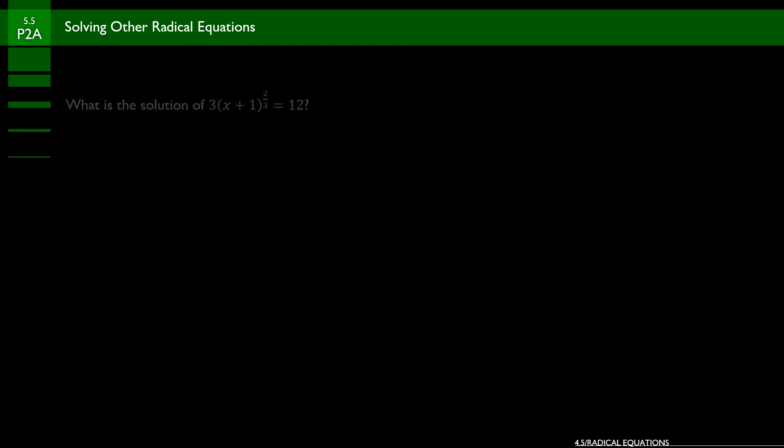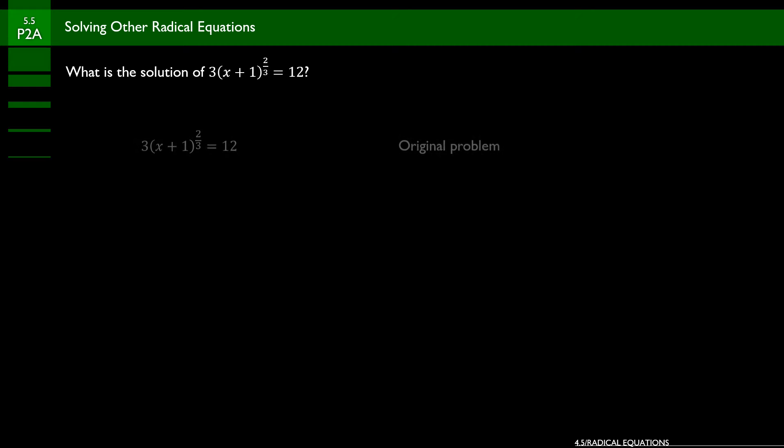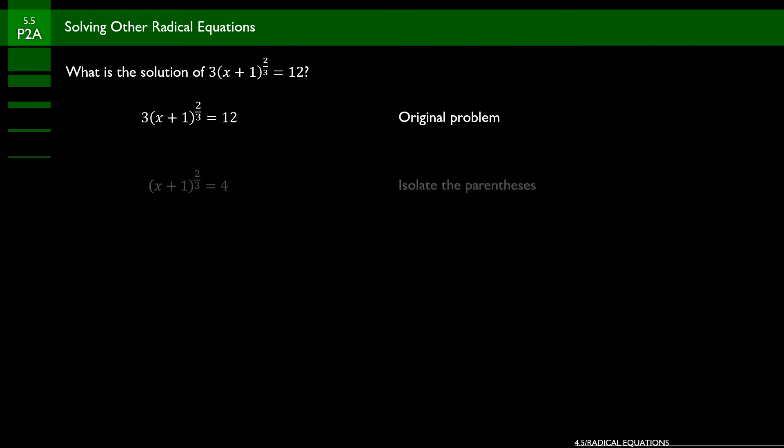In problem 2a, we've got a rational exponent to deal with. The equation is: what is the solution of 3 times the quantity x plus 1 to the 2/3 equals 12? The first thing we want to do is work on the outside of the parentheses — get rid of that 3. Divide both sides by 3, leaving the quantity x plus 1 to the 2/3 equals 4.